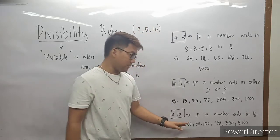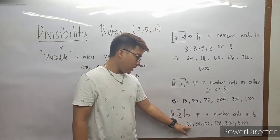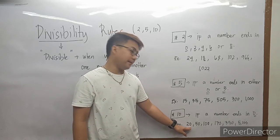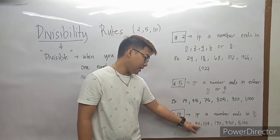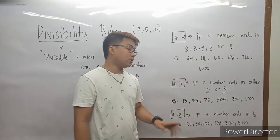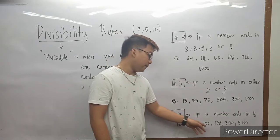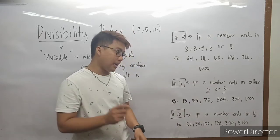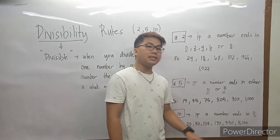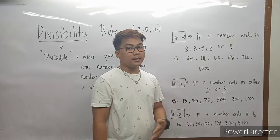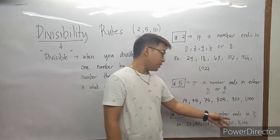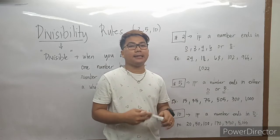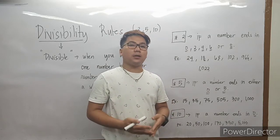Gagyan tayo ng examples: 20 — nagtatapos sa 0, automatic divisible by 10. 50 — nagtatapos sa 0, automatic divisible by 10 also. 100 — last digit is 0, alam na natin yan. 170 — nagtatapos sa 0. 350 — nagtatapos sa 0. And 5,100 — nagtatapos din sa 0. All divisible by 10.